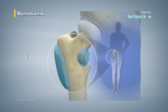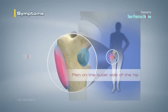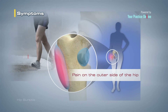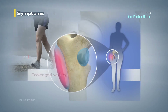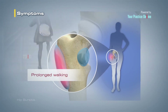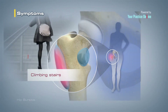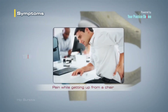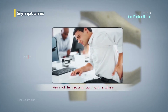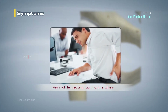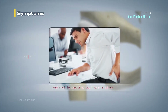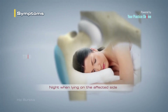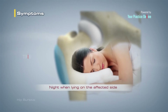Trochanteric bursitis results in pain on the outer side of the hip, which usually increases with prolonged walking or climbing stairs. The pain is felt more while getting up from a chair and at night when lying on the affected side.